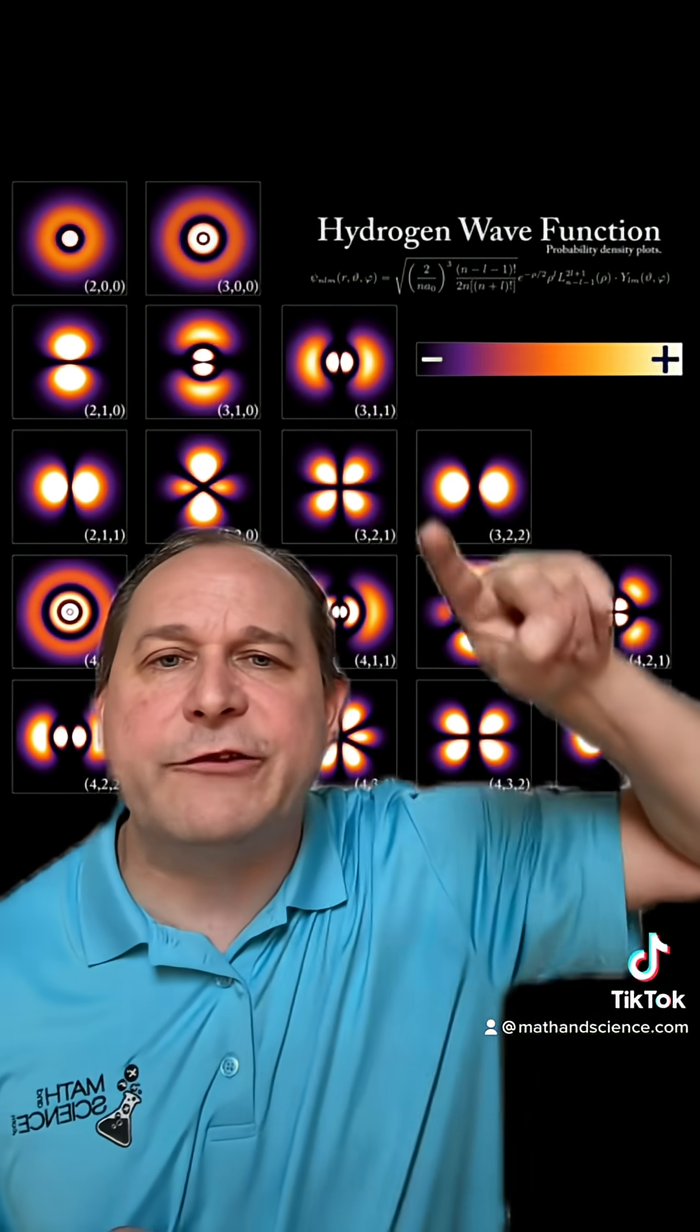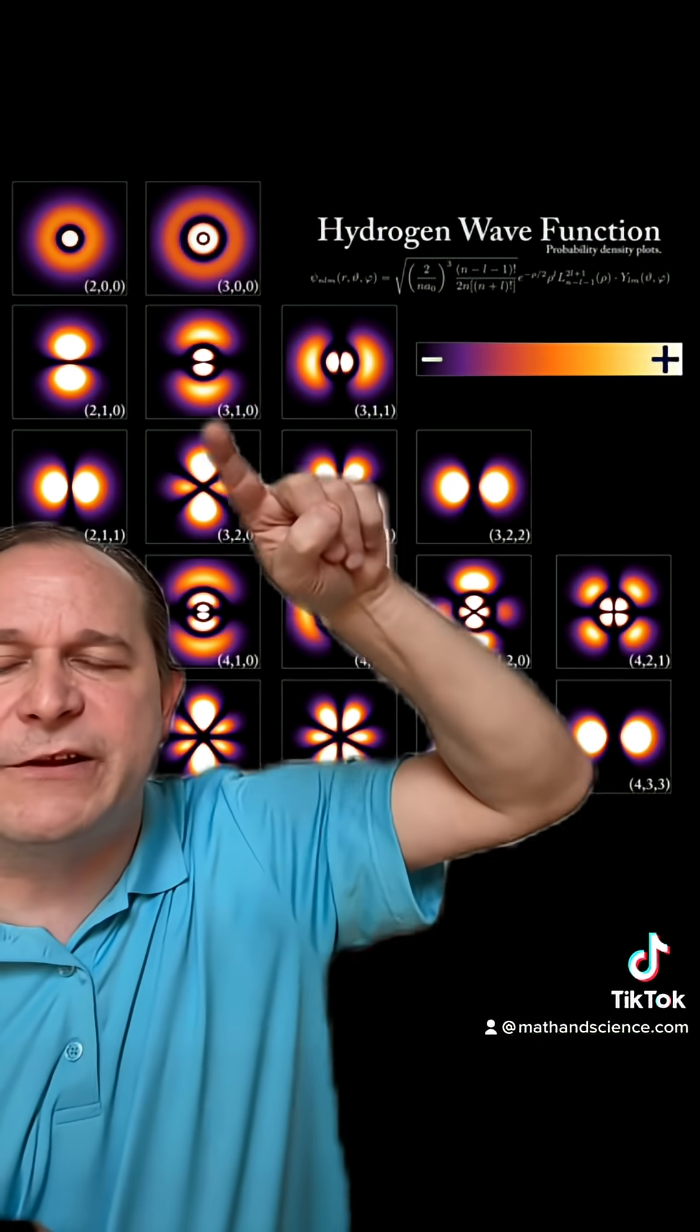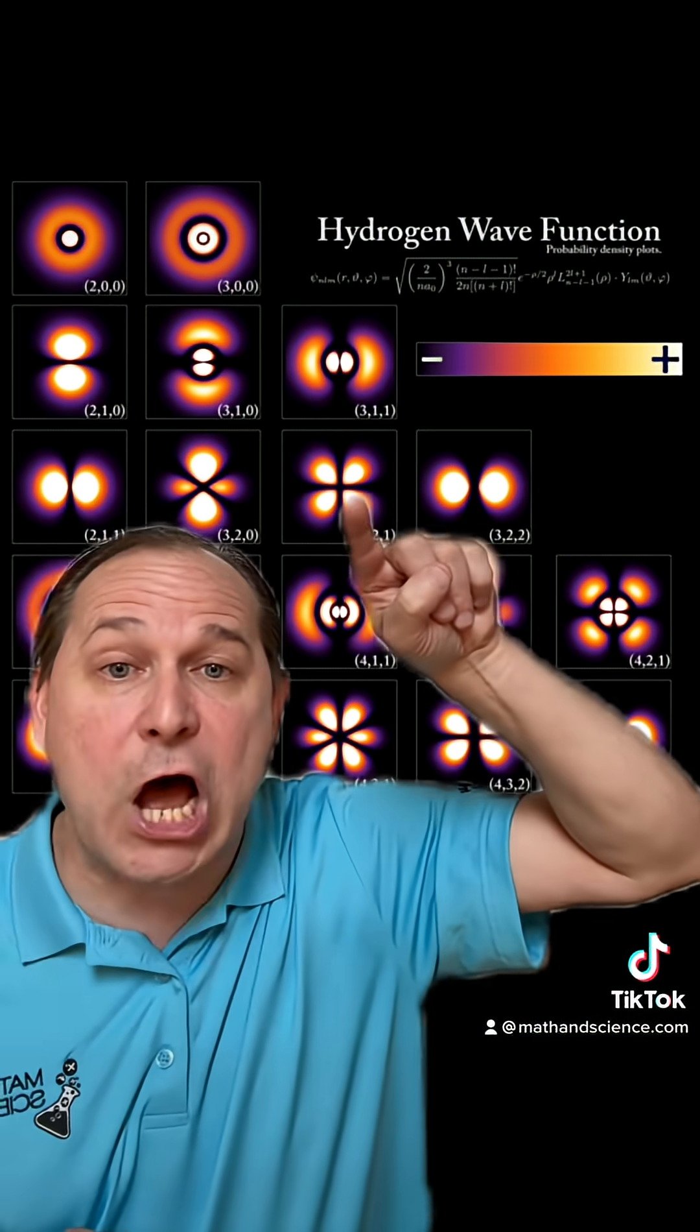Now, these different shapes govern the probability of finding the electron in different positions. If the electron is in this configuration, then it'll look like it's closer to the nucleus. But it also can have these lobed configurations where the black areas are where the electron definitely is not, and the probability is higher in the brighter regions.